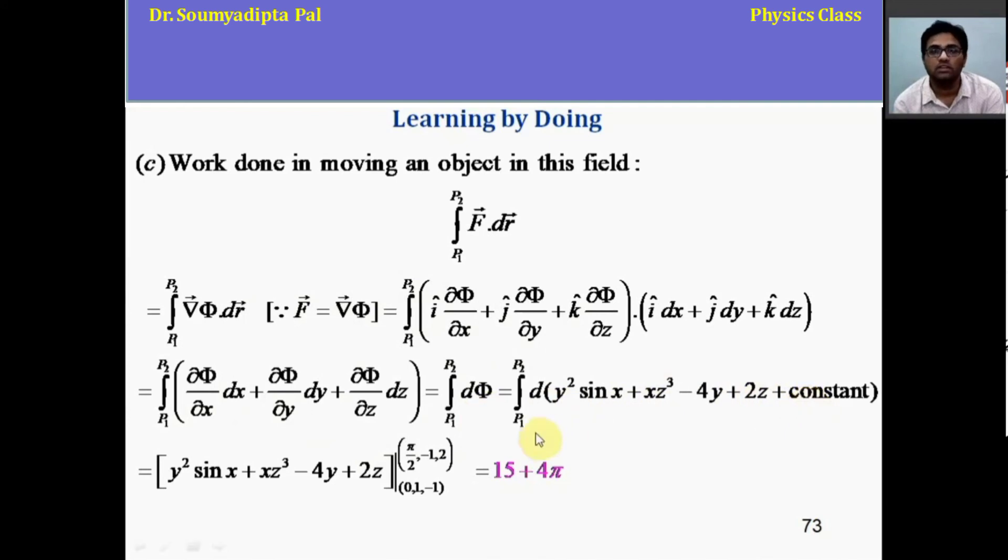And the expression of phi we have already obtained. That is y square sin x plus x z cube minus 4 y plus 2 z and arbitrary constant. Now, after integration, we get this. So, this is similar to integration of dx. If you do the integration of dx, what you will get? You will get x. So, similarly here integration of d phi, you are getting phi. And the expression of phi is like this. And here the points p1 is 0, 1, minus 1 and p2 is phi by 2, minus 1, 2. Now, putting these values, we get this value of work done. So, here one important point you should remember that as the force field is conservative in nature, work done is path independent. And the value is potential difference between the final and initial points.